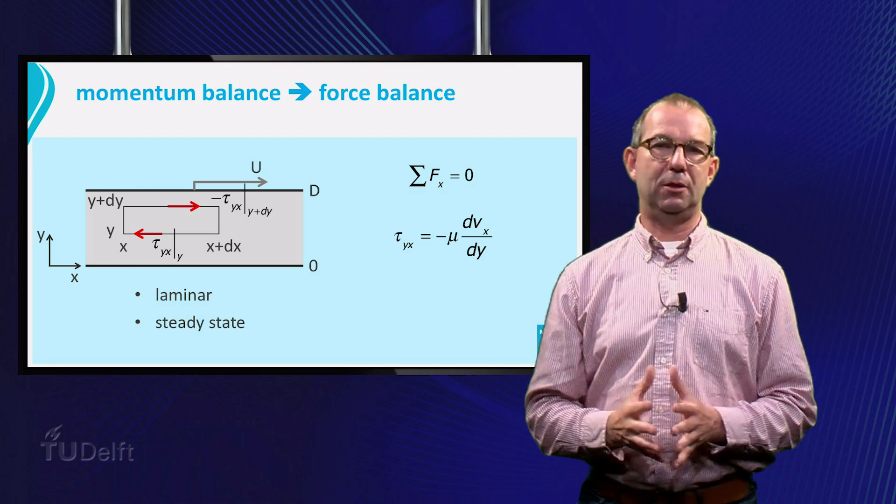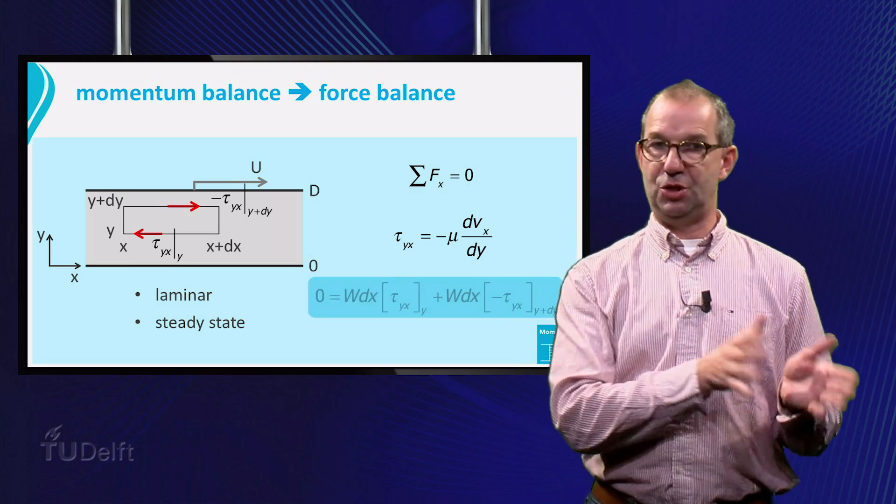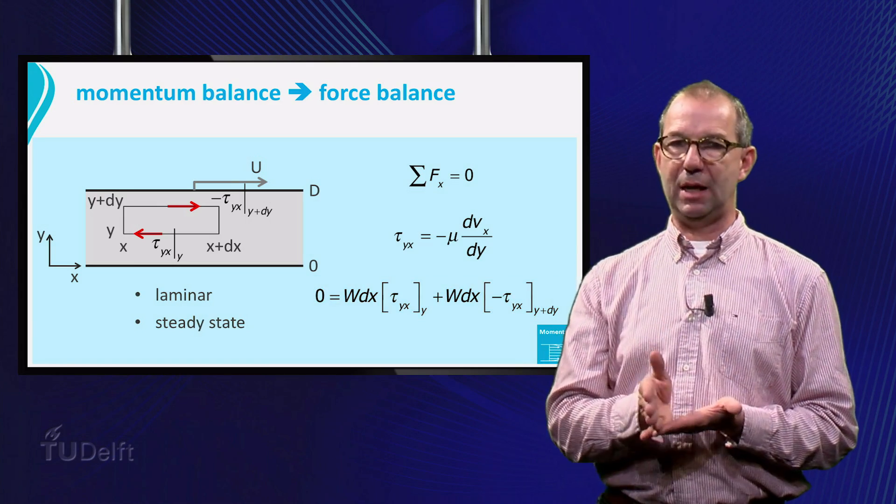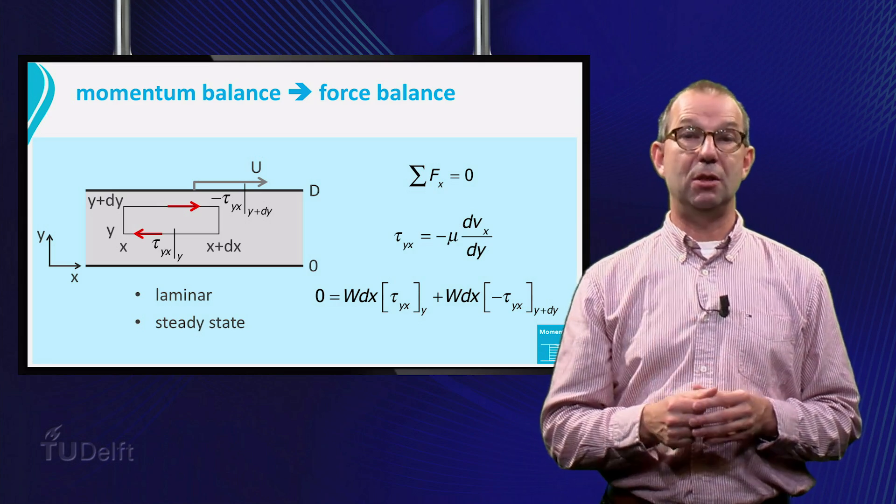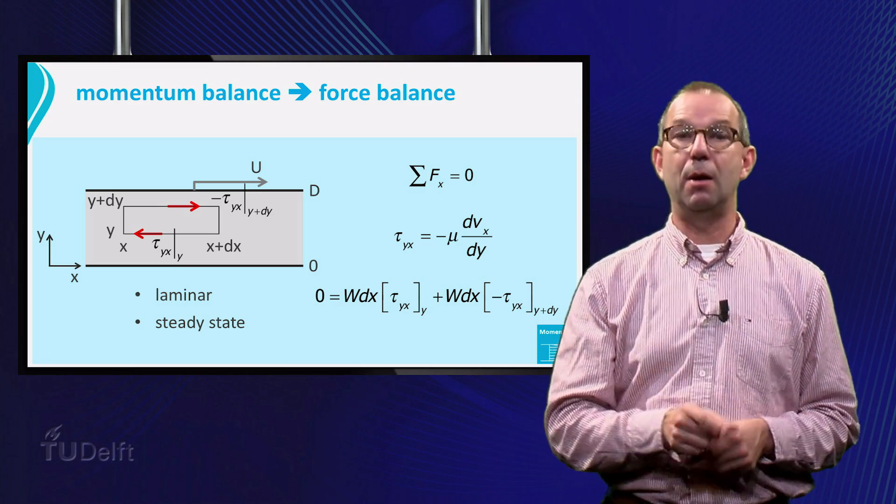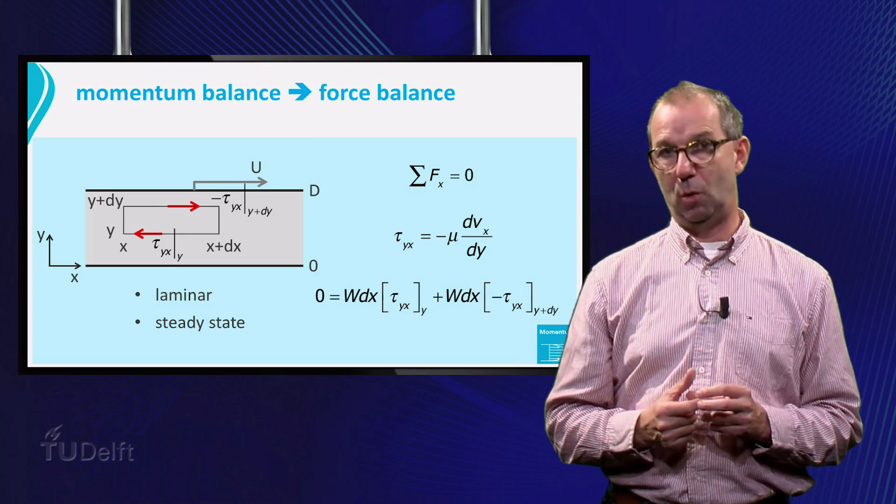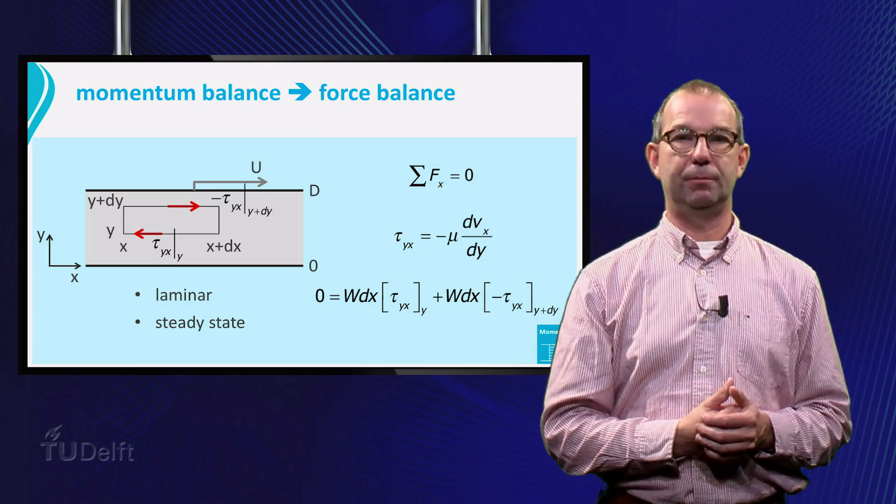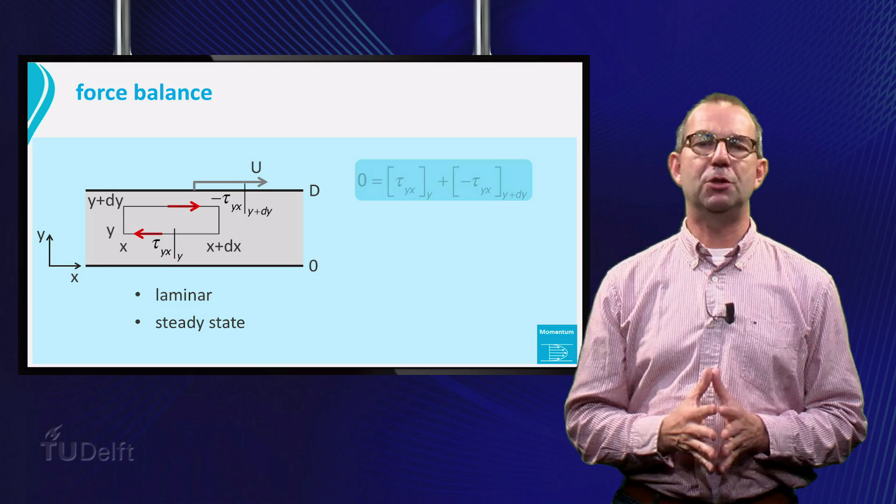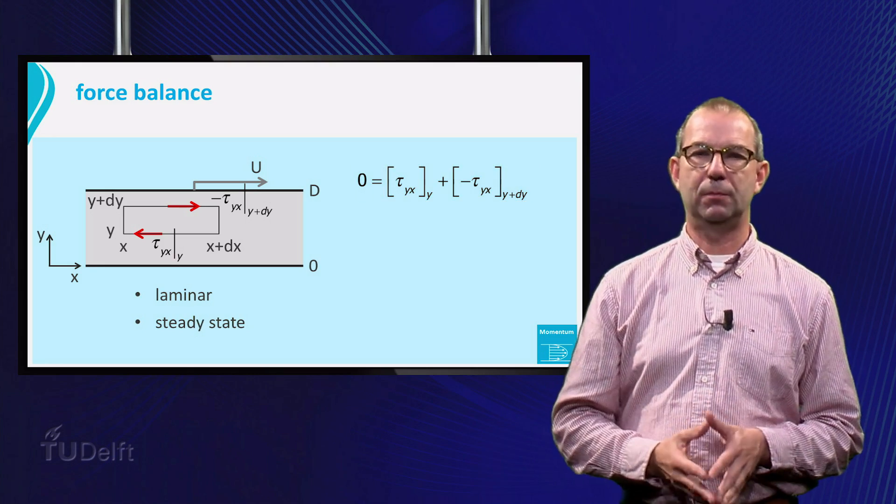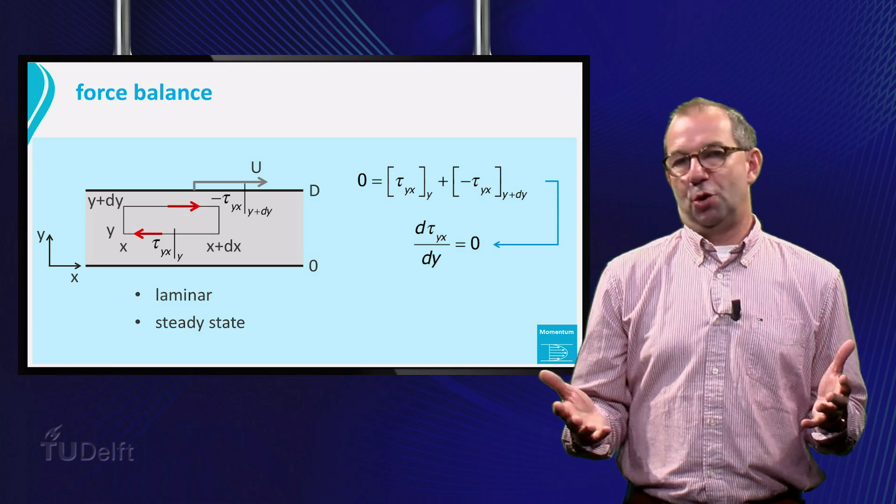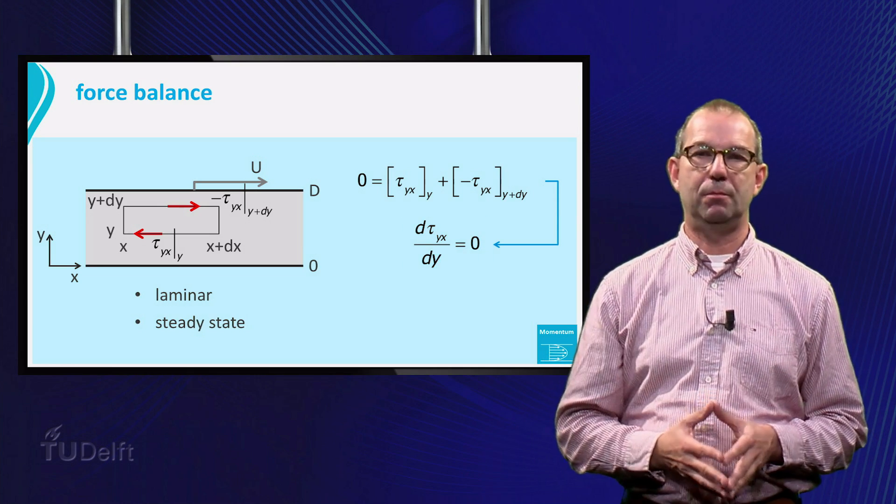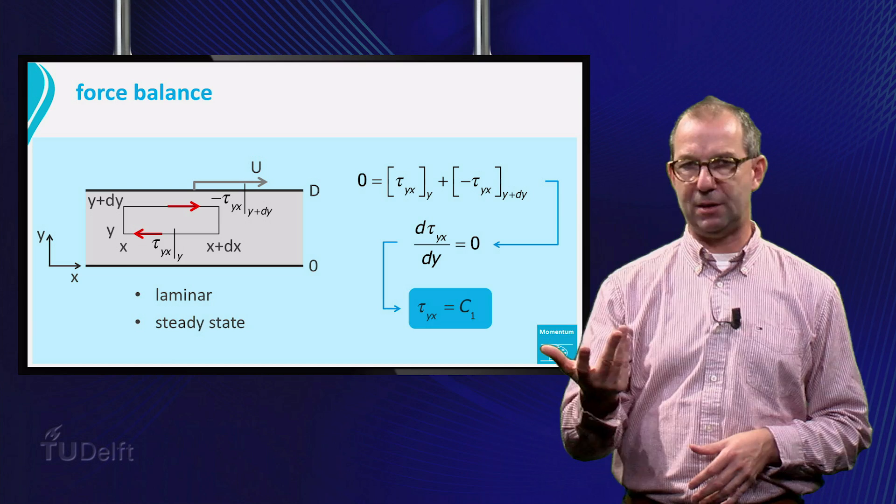Putting it all together, our force balance reads as 0 equals w dx tau yx at y plus w dx times minus tau yx at y plus dy. This can be turned into a differential equation for tau: d dy of tau is 0. Not the most difficult equation. Tau is a constant with respect to the y coordinate.